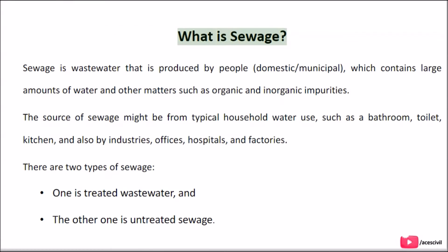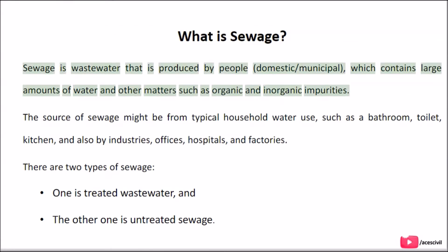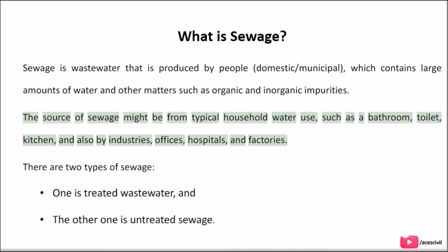What is sewage? Sewage is wastewater that is produced by people — domestic and municipal — which contains large amounts of water and other matters such as organic and inorganic impurities. The source of sewage might be from typical household water use, such as a bathroom, toilet, kitchen, and also by industries, offices, hospitals, and factories.